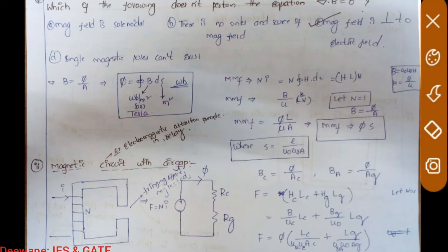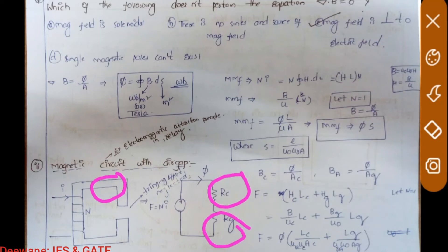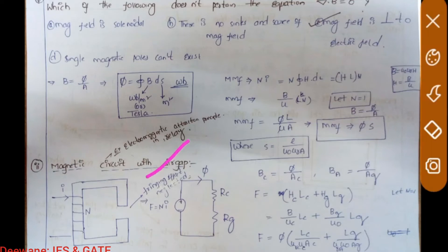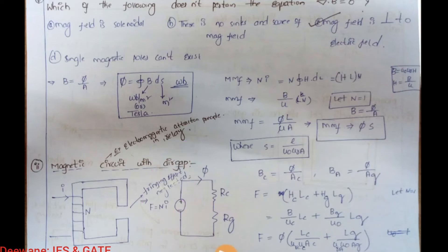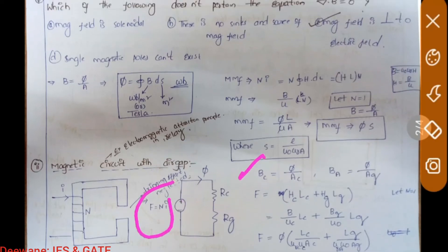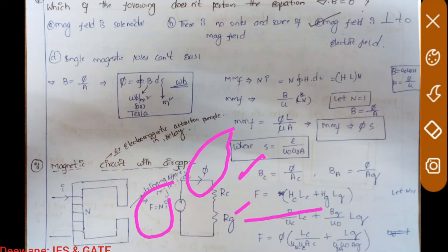In the second case, Rc is the core reluctance of the transformer and Rg is the air gap reluctance — an additional reluctance introduced. Note that I have neglected the fringing effect here. The fringing effect means flux density increases in the air gap. The MMF N·I acts as a source, Rc and Rg are like resistances, and phi is like current — this is the analogy.